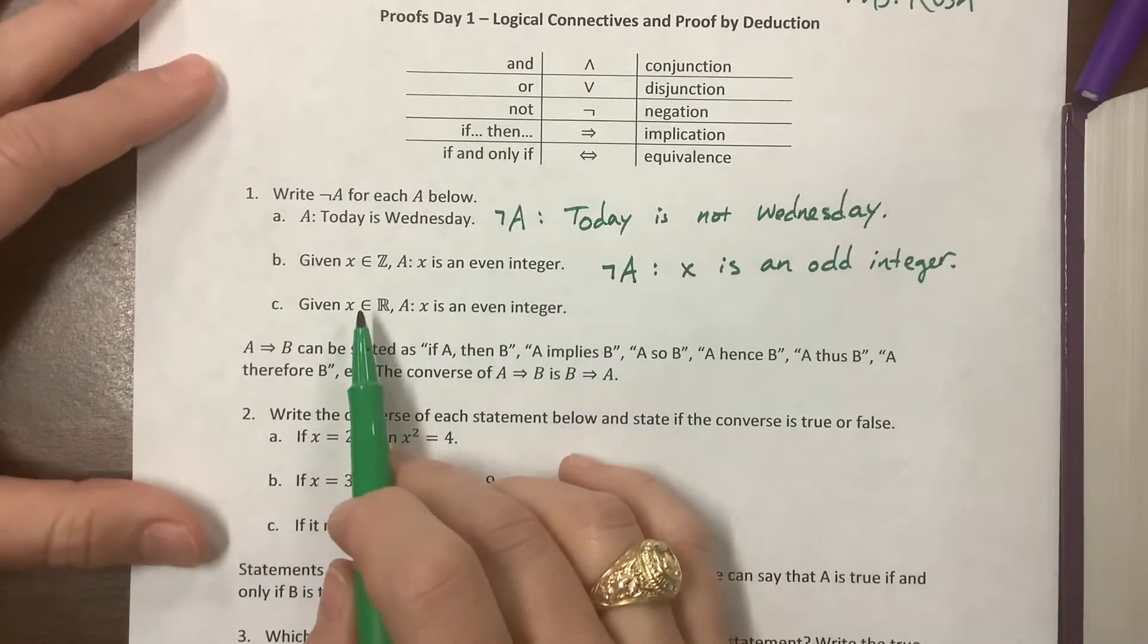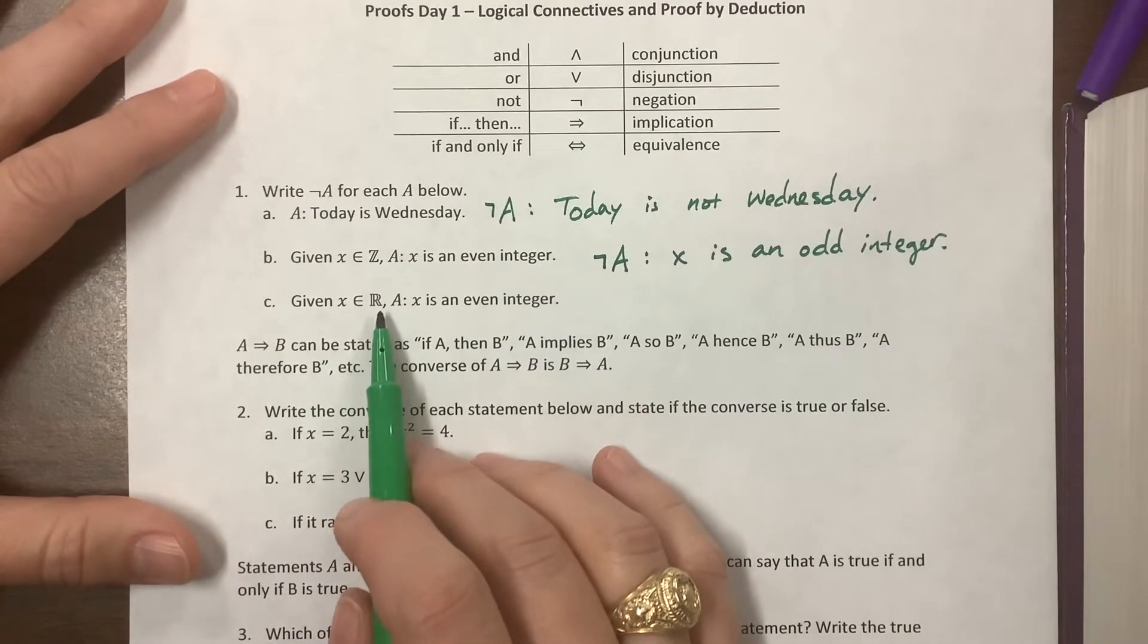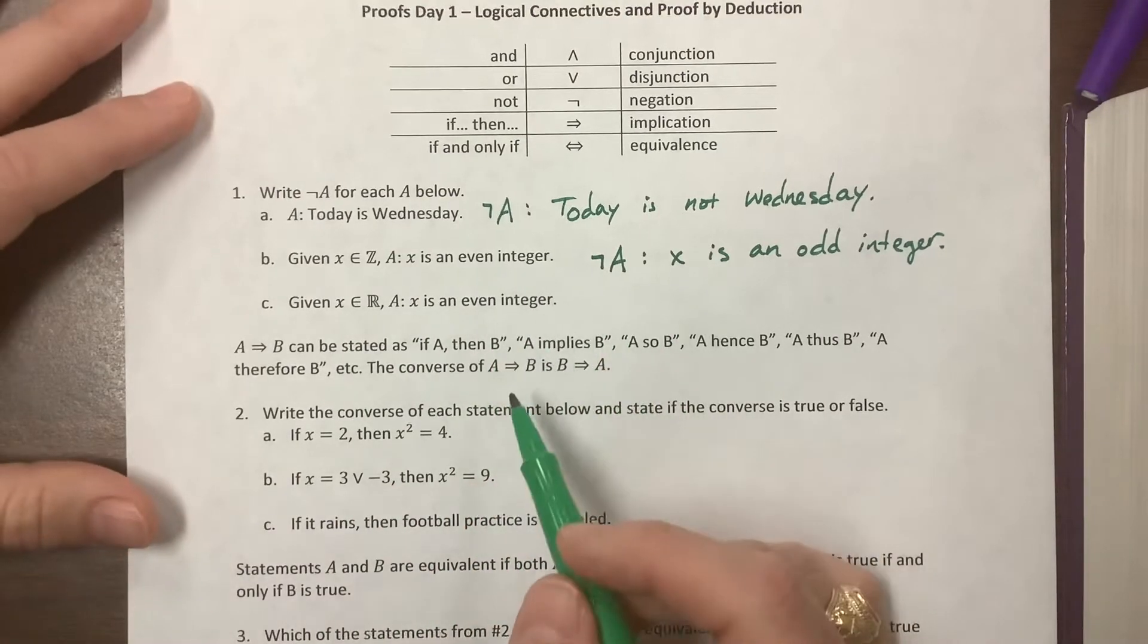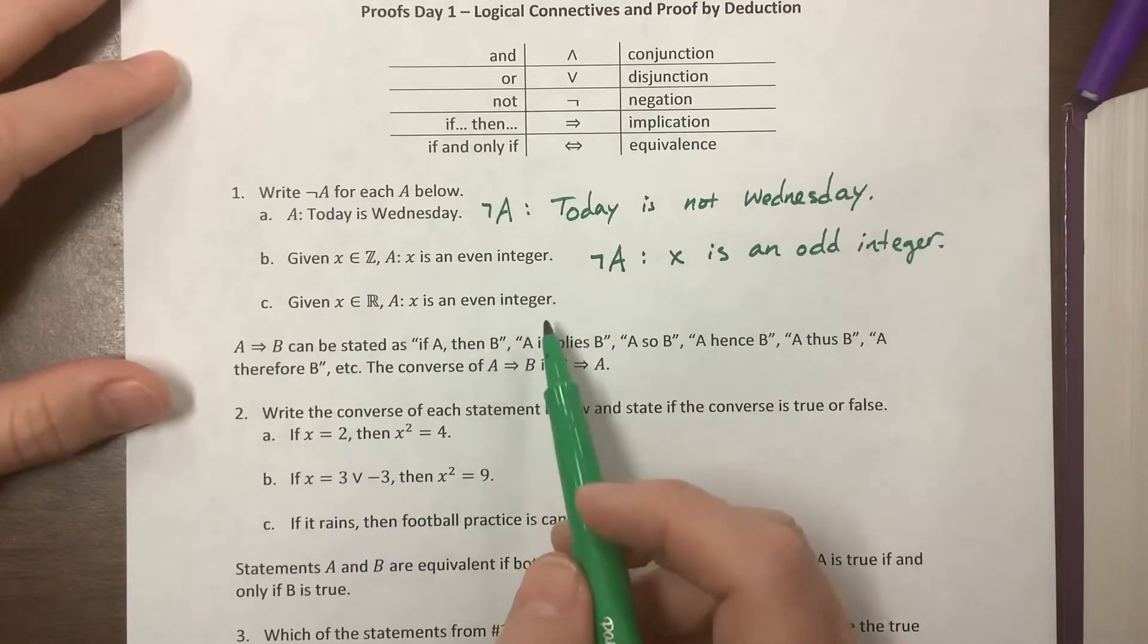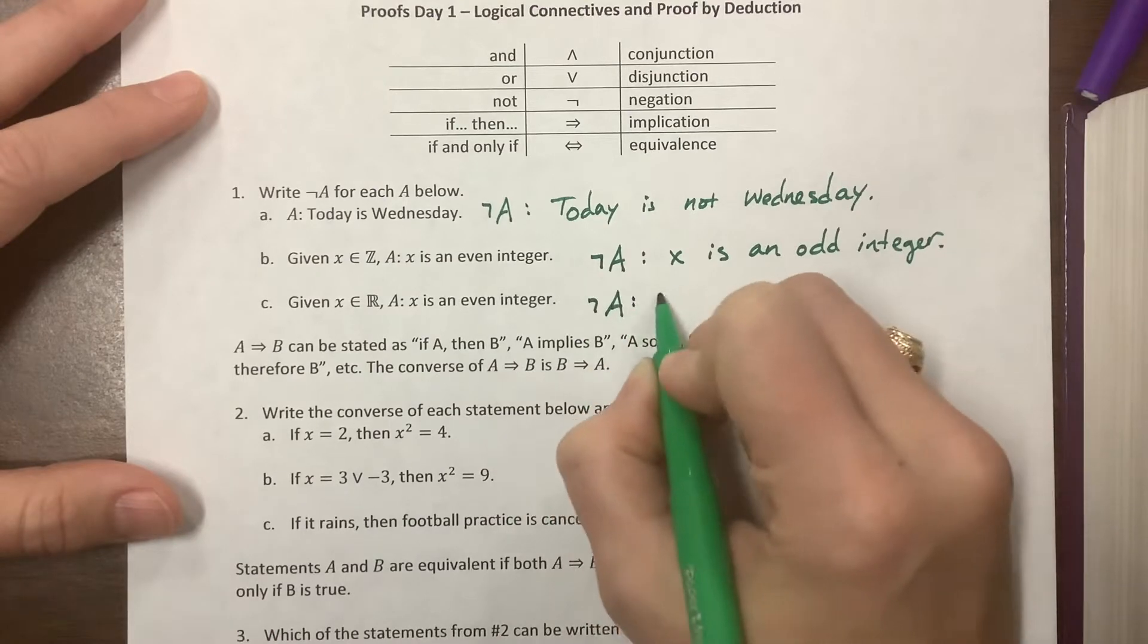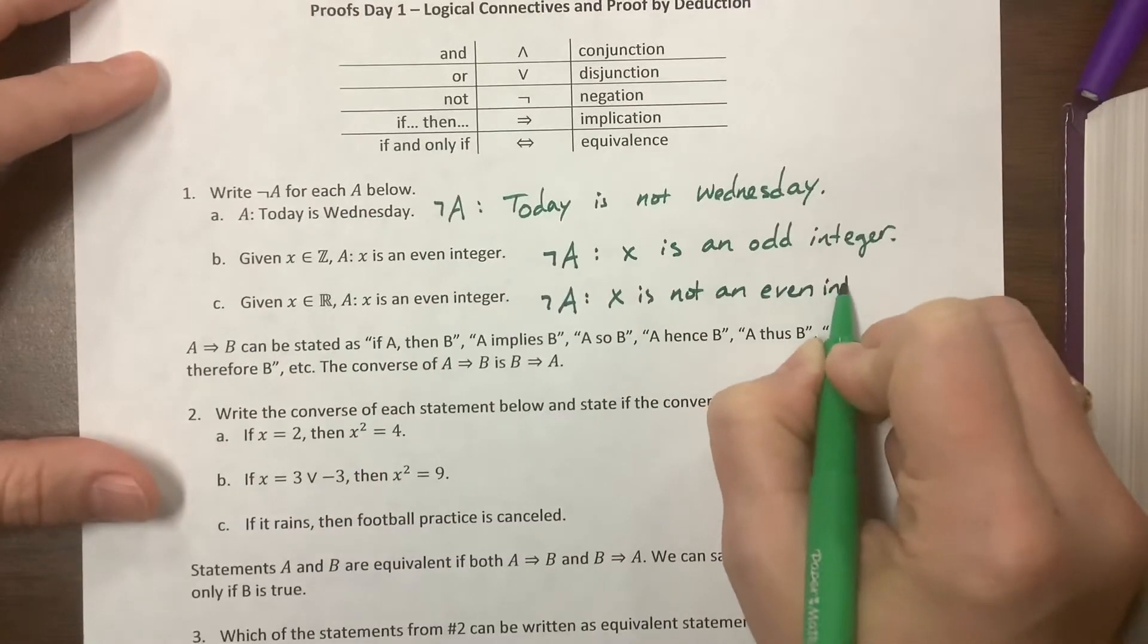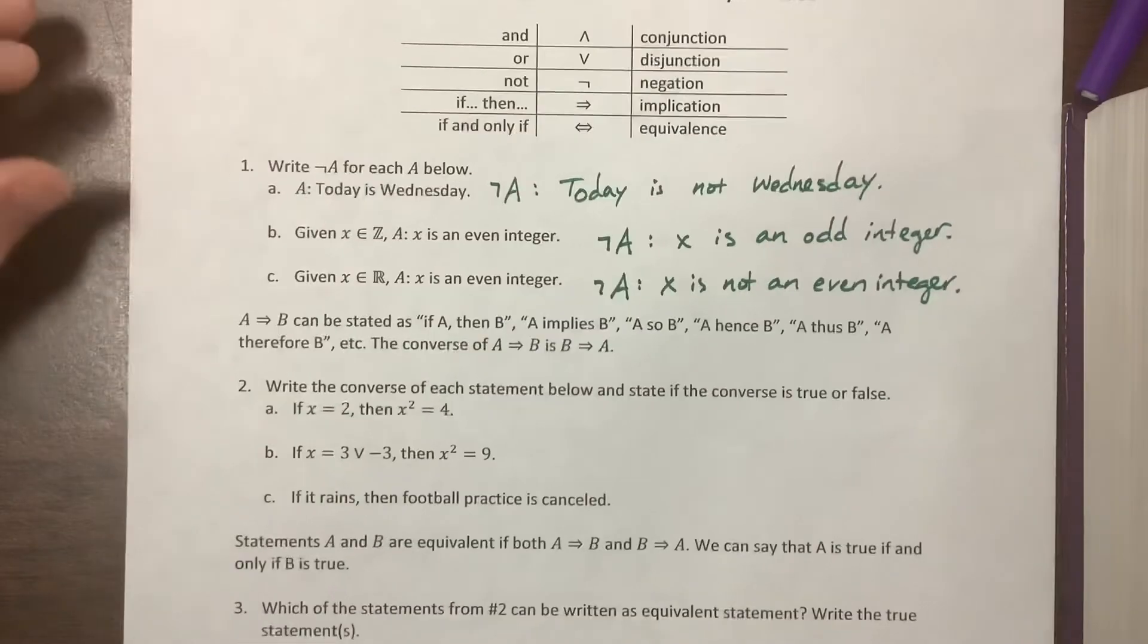However, this one changes things up a bit. They're saying x is a real number. Now, if x is not an even integer, it could be one-half, which is not an integer at all. It could be pi, which is not an integer. So our negation 'not A' is 'x is not an even integer,' because we've got many options for what it could be.